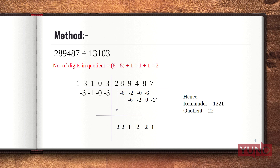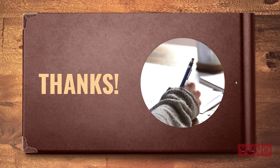The quotient has 2 digits, so 22 is our quotient, and the remaining digits — 1,221 — form our remainder. I hope you understand this method. Stay tuned for the coming videos. Thank you.